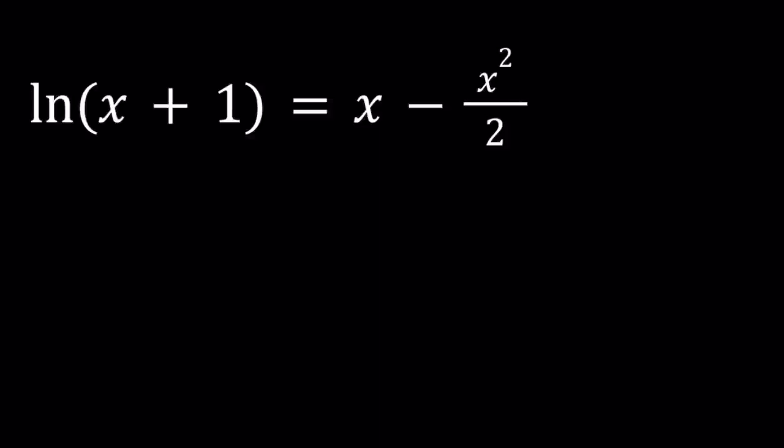We have ln(x+1) equals x minus x² divided by 2. This is a non-standard equation because we have ln on one side and a polynomial or a parabola on the right hand side.